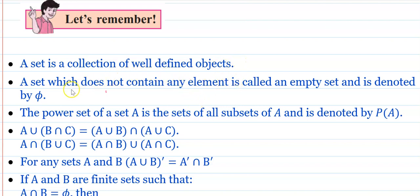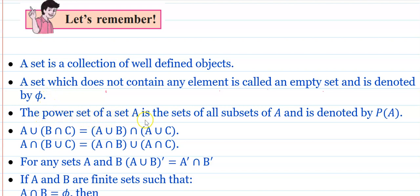When we revise, what is the first point? A set is a collection of well-defined objects. A set which does not contain any element is called an empty set and is denoted by phi. The power set of a set A is the set of all subsets of A and is denoted by P of A.